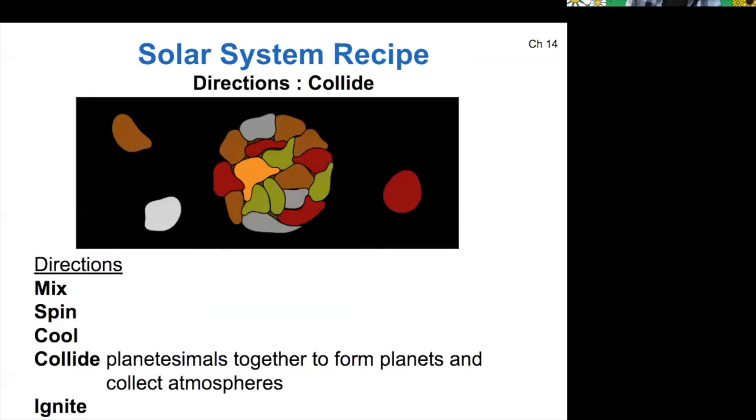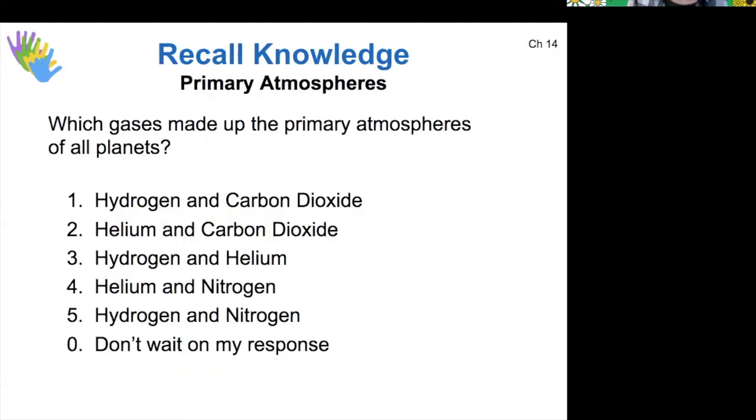So now in our solar system formation process, we have spun into a flat disk, we have cooled the material out, and now it's time for those bits to collide together to form planets and collect atmospheres. So returning to the idea of atmospheres that we've talked about quite a bit, which gases made up the primary atmospheres of all of our planets?